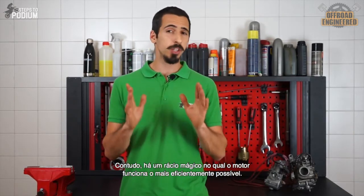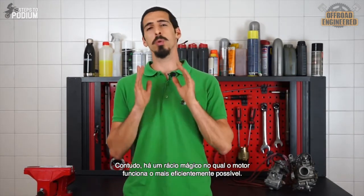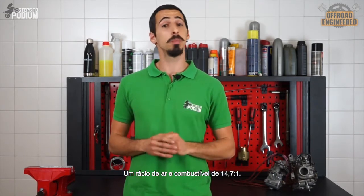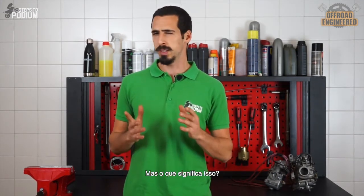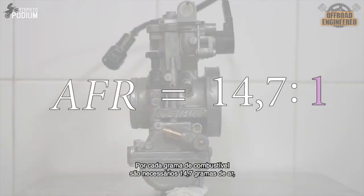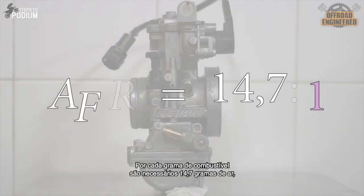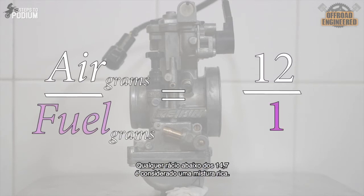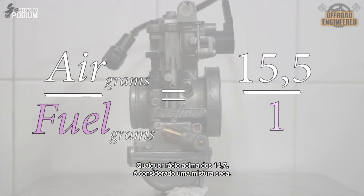However, there's a magical number for an engine to work the most efficiently possible. An air-fuel ratio of 14.7 to 1. For every 1 gram of fuel there has to be 14.7 grams of air, since air is not just made of oxygen. Any air-fuel ratio under 14.7 is considered a rich mixture and anything more than 14.7 is considered a lean mixture.